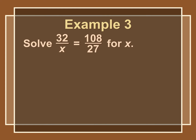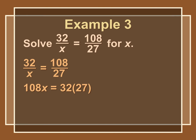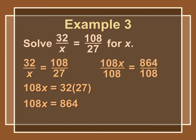Let's try another proportion. Multiplying the extremes gives 32 times 27, and multiplying the means gives 108 times x. So 32 times 27 is 864. Dividing both sides by 108, we get x is equal to 8.